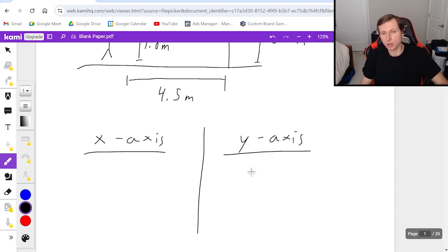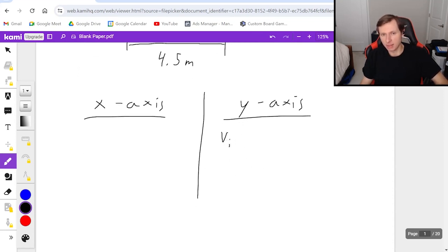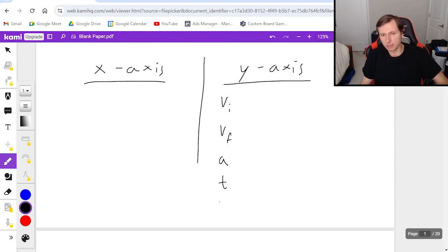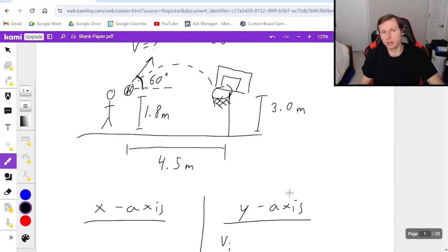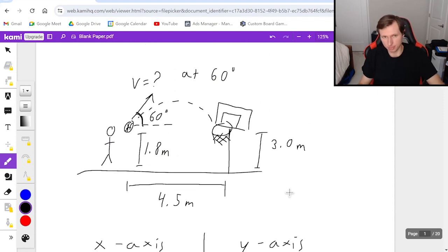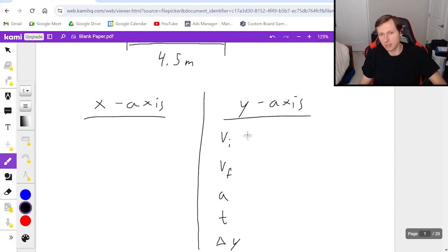And when I say start with the y-axis, I'm saying I'm gonna ask myself what's v initial, v final, acceleration, the time, and the displacement delta y. And now I have to go through these variables one by one starting with v initial. You'll obviously notice I do not know what v initial is. We can just call it v or I can call it v_y because it's the y component of my velocity.